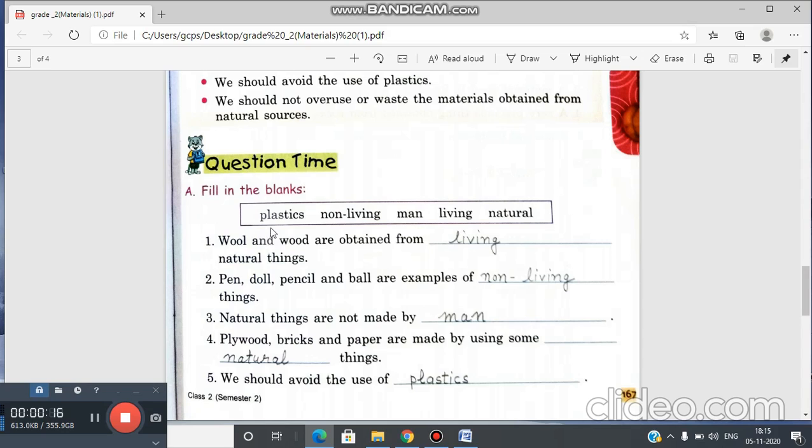Fill in the blanks. The words are plastic, non-living, man-living and natural. Wool and wood are obtained from natural things. From living natural things.